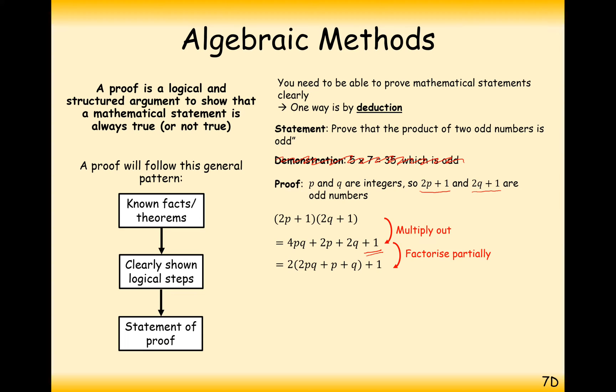And can we factorise our 2 out of this? I do believe we can. So partially factorise it. So we get a 2 at the front of this bracket here. Don't include the 1 in this factorisation. Leave that alone at the end. So it's 2 bracket 2pq plus p plus q, close bracket, plus 1.